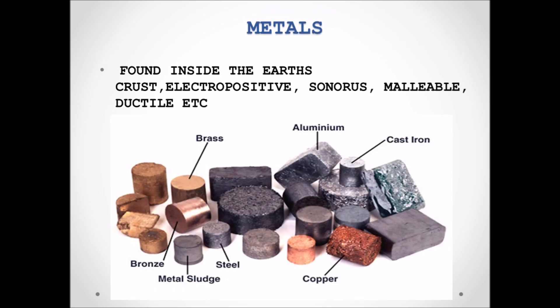Firstly we're going to study about metals. Metals are found inside the earth's crust as ores. Ore is a naturally occurring rock that contains desirable minerals. It is an electropositive element and also sonorous. Sonorous means that they can produce metallic sound when struck by some hard object. It is malleable, which means that it can be beaten or made into a flat or thin sheet, and also ductile, which means that it can be drawn into wires.